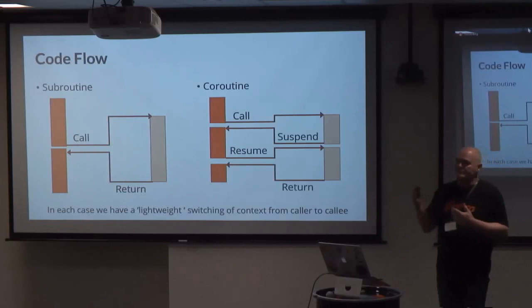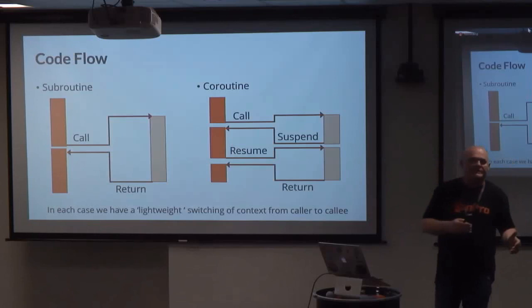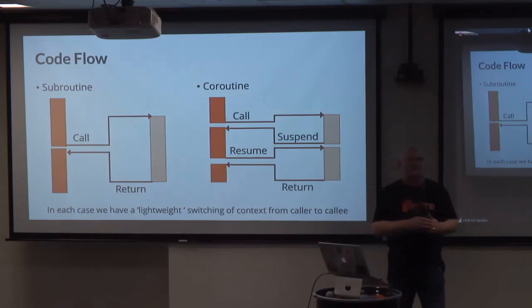If you look at the code flow, you can see a subroutine here on the left, coroutine on the right. You have a context switch from one flow into another flow. In the case of the subroutine, it is complete in and of itself. In the case of the coroutine, you suspend in the middle, and you go back as many times as you like to resume from that suspend point.